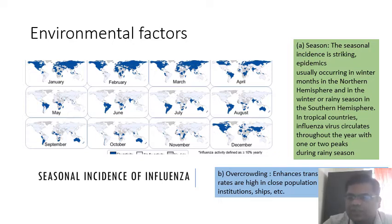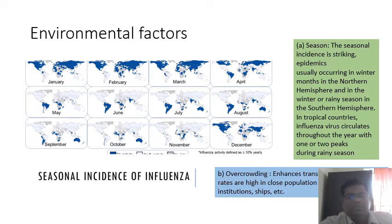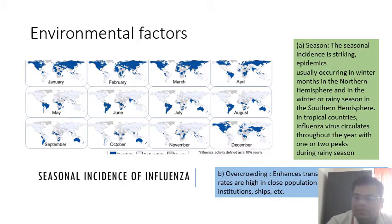Environmental factors affecting influenza: seasonal incidence is striking. Epidemics usually occur in the northern hemisphere during winter months, and in the southern hemisphere during winter or the rainy season. In tropical countries, the virus circulates throughout the year with one or two peaks during the rainy season. Overcrowding enhances transmission, as seen in India. High humidity negatively affects the virus and can lead to a decrease in transmission.